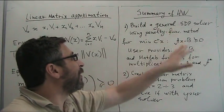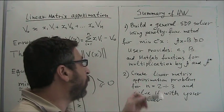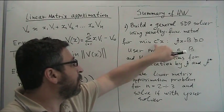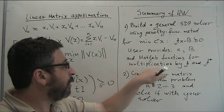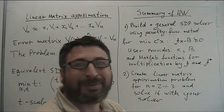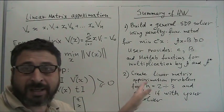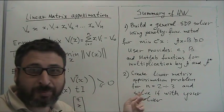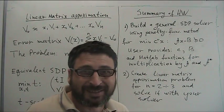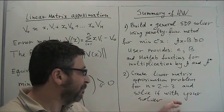In summary, your first task is to build a general solver for semi-definite programs in the given form, where the user provides vector c, matrix B, and functions implementing the mappings A and A^*. Then create a particular instance of the linear matrix approximation problem for N equal to 2 or 3, using random matrices or matrices of your choice, and solve it with your solver.